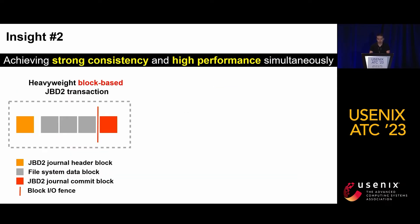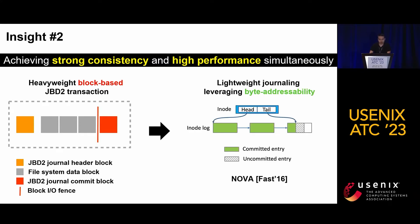Insight number two: by using a lightweight journaling mechanism, we can enable strong crash consistency with little performance overhead. Traditional kernel file systems such as EXT4 ensure file system consistency with a block-based journaling mechanism like JBD2. The block-based journaling mechanism is very heavyweight — it requires complex transaction operations involving multiple block writes. In contrast, upon fast and byte-addressable storage devices, lightweight journaling can enable strong consistency with little overhead. For instance, NOVA ensures that each file system update is synchronously persisted in an atomic manner by atomically updating an 8-byte pointer on persistent memory.